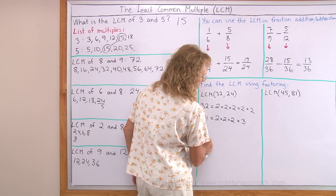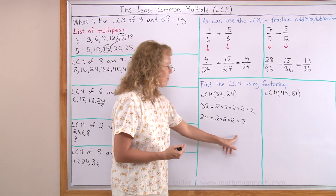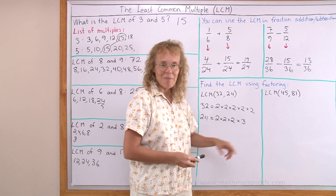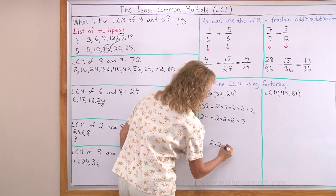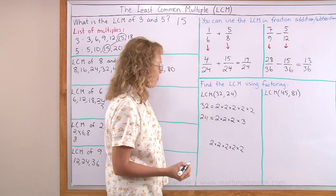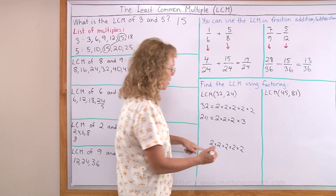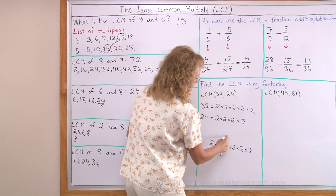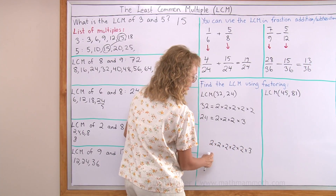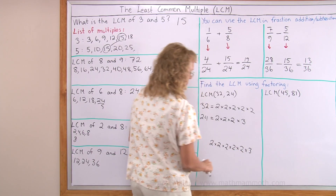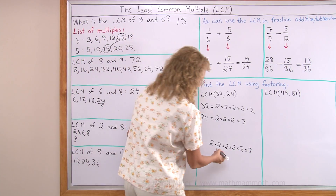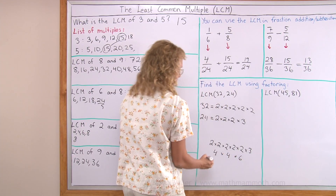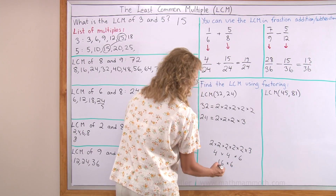I will write here the prime factorization of the number we are looking for — the LCM. Its prime factorization has to include 2 to the fifth, and also has to include the factorization of 24. Since it has to include 2 to the fifth, it already has 2 times 2 times 2, and then I add times 3. So that gives the prime factorization of 24 here, and the prime factorization of 32 here. Whatever number that is, is the LCM — it would be the same as 4 times 4 times 6, which is 16 times 6, which is 96.